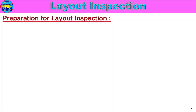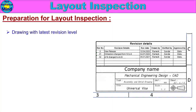Now, preparation for layout inspection. First, use the drawing with the latest revision. We check the revision details table, check the revision date, and confirm it with senior or higher officials — to ensure we are using the latest drawing for inspection.